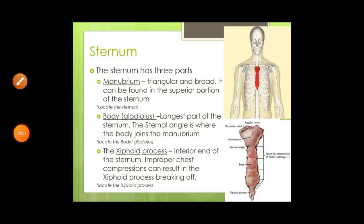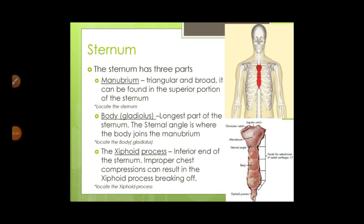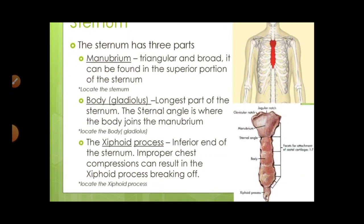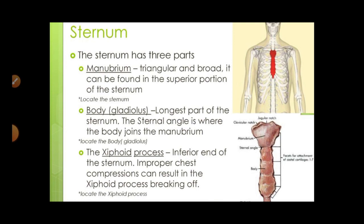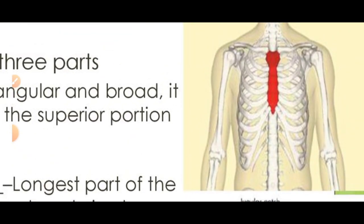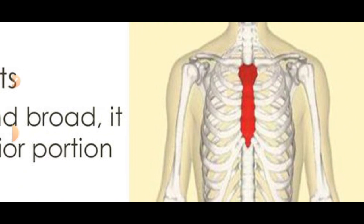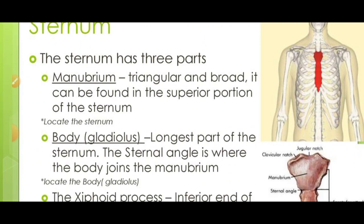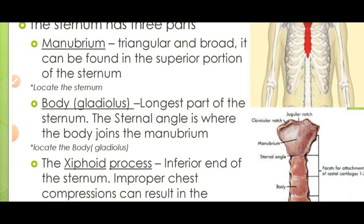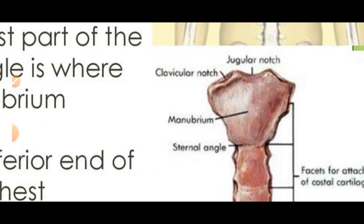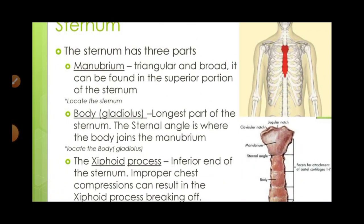Next we want to learn about the sternum. Sternum is called the breast bone, located in the middle. The red colored bone in the image is called the sternum. Sternum has three parts. The first part is called the manubrium — it is trapezoid, triangular and broad in shape. It can be found in the superior portion of the sternum — the upper part.